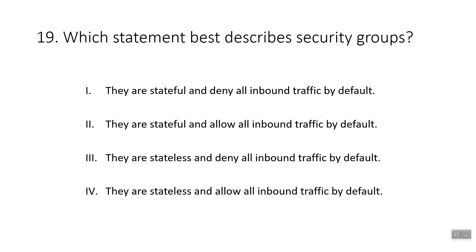The nineteenth question: which statement best describes security groups? The answer is security groups are stateful and deny all inbound traffic by default. AWS security groups act as a virtual firewall for EC2 instances, controlling incoming and outgoing traffic. Both inbound and outbound rules control the flow of traffic to and from the instance.